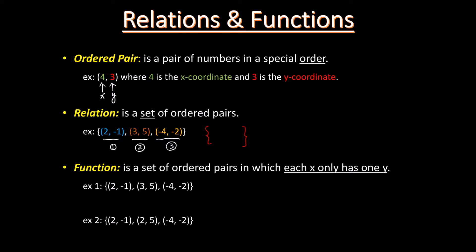The last definition is function. It's a set of ordered pairs in which each x-value only has one y-value. Let me show you two examples. Example one is a relation with three ordered pairs. The x-coordinate is the first number and the y-coordinate is the second number in each ordered pair. Let's check if this relation is a function. Here we can see each x-value only has one y-value, since 2 maps to negative 1. So it's a function.